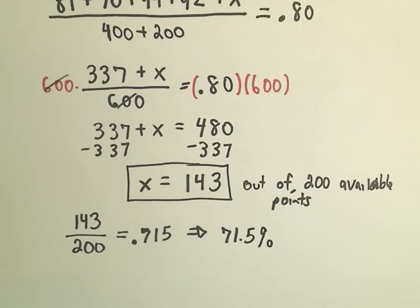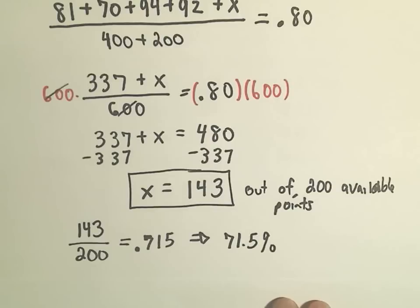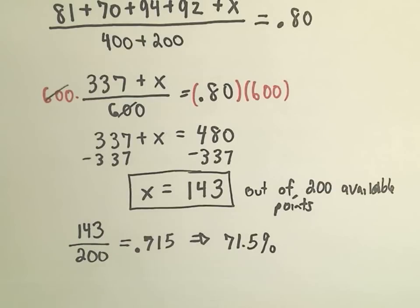So you need to make a little bit over a 70 to ensure that you at least keep an 80% average in the class, which at least in college in the U.S. would be a B. So all you have to do is make a little bit over a 70 to maintain your B average.